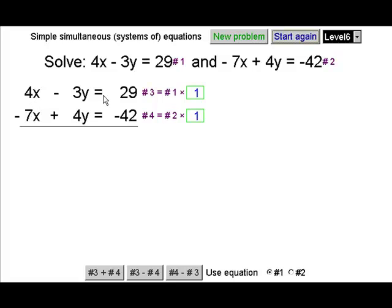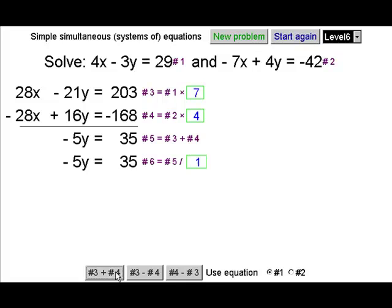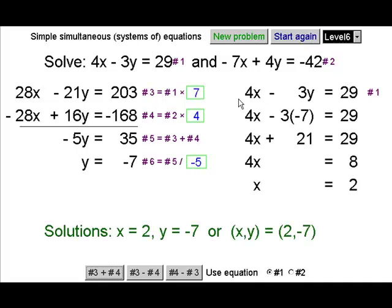I hope you can see that if we multiply the top equation by 7, 28 x's there. We can get minus 28 x's on the bottom if we multiply the bottom equation by 4. Now adding is going to eliminate the x's and leave us with our fairly simple equation to find y. Dividing through by minus 5 to get the y value and then the x value.